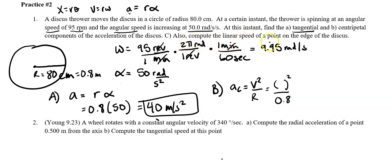C also includes the linear speed of a point on the edge of the disk. So let's go ahead and do C. C is v equals r omega. So r at the edge of the disk is 0.8 and omega is 9.95. And I got 7.96 meters per second. That's the linear speed at a point on the edge of the disk.